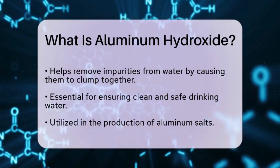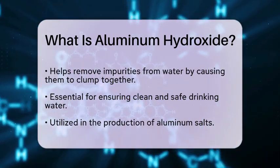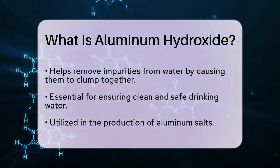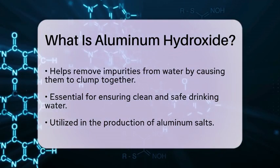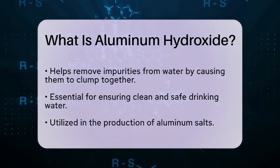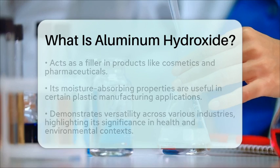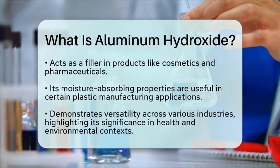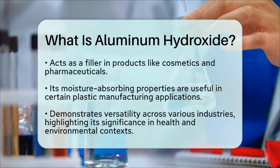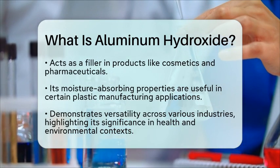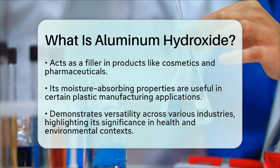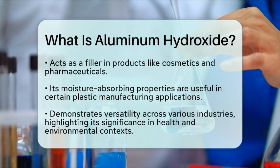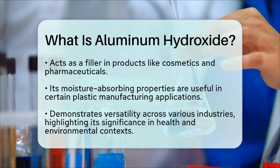Furthermore, Aluminum Hydroxide is utilized in the production of aluminum salts and as a filler in various products, including cosmetics and pharmaceuticals. Its ability to absorb moisture makes it useful in certain applications, such as in the manufacture of certain types of plastics.